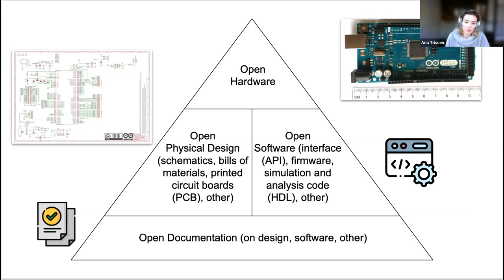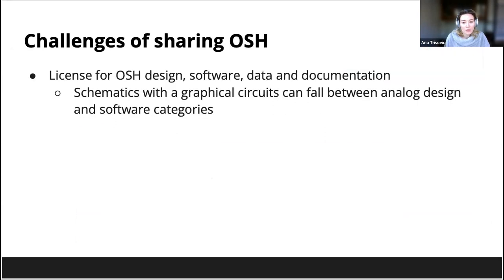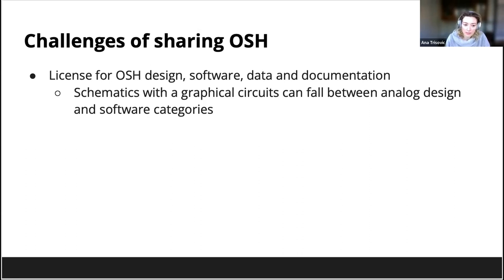Now that we understand the structure of open hardware, we can see the challenges in sharing and reusing it. The first challenge is licensing: for open source design, software, data, and documentation, each component requires a specific license. Complexity arises when some components — like schematics with a graphical circuit — fall between analog design and software categories, making it unclear whether to apply a data license or a software license.